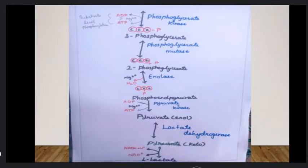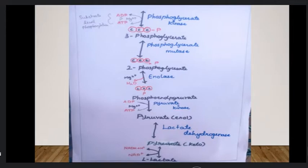3-phosphoglycerate undergoes a mutase reaction to become 2-phosphoglycerate. Mutase moves the group within the same molecule, which is different from kinase. Then enolase acts on 2-phosphoglycerate, removing water (H2O) to produce phosphoenolpyruvate (PEP). This is a dehydration reaction.